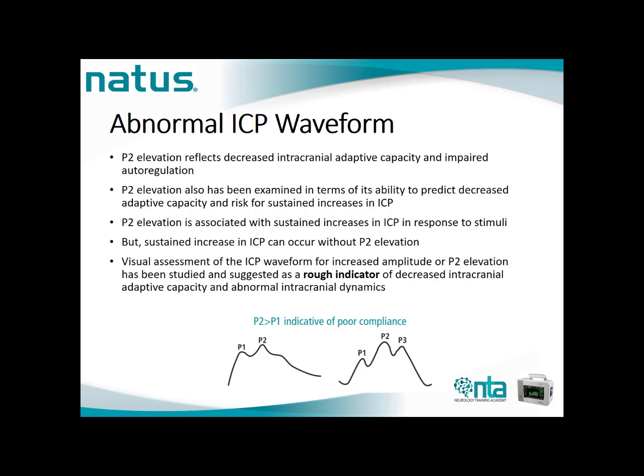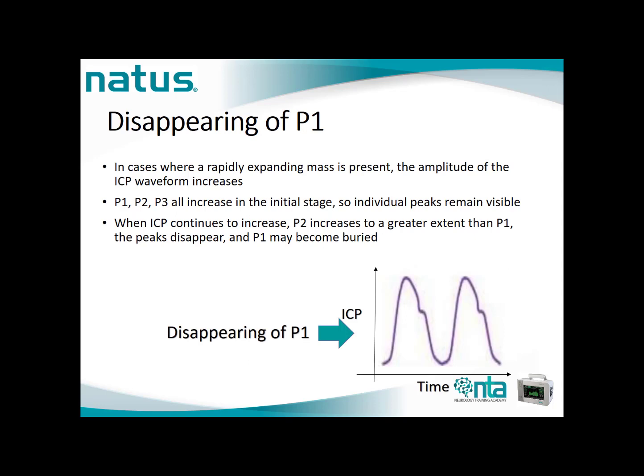Another type of abnormal ICP waveform involves the disappearing of P1, where P1 and P2 merge together. In cases where a rapidly expanding mass is present, the amplitude of the ICP waveform increases — P1, P2, and P3 all increase in the initial stage while individual peaks remain visible. But when ICP continues to increase, P2 increases to a greater extent than P1, the peaks begin to disappear, and P1 may become buried.